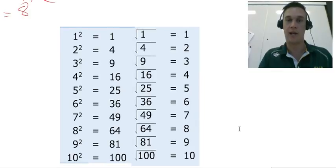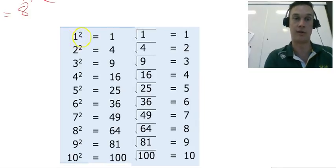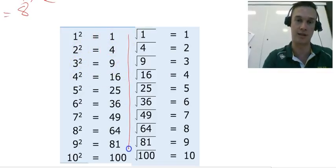So here we have the first 10 squared numbers. 1 squared is 1, 2 squared is 4, 3 squared is 9, 4 squared is 16, etc. all the way down to 10.